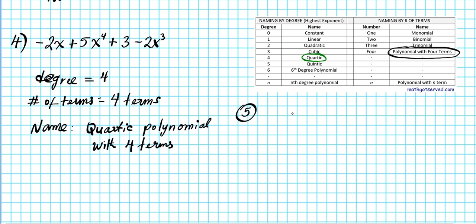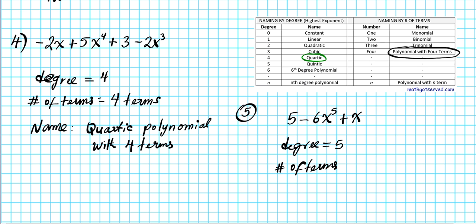Example five: 5 minus 6x to the fifth plus x. The highest exponential value is 5, and the number of terms is 3. A fifth degree polynomial is called a quintic, and three terms is a trinomial. So the name of this polynomial is a quintic trinomial.